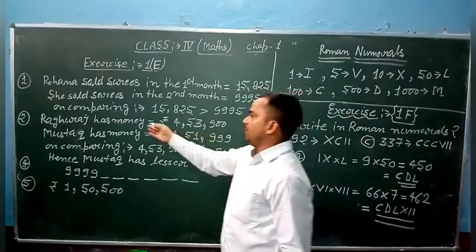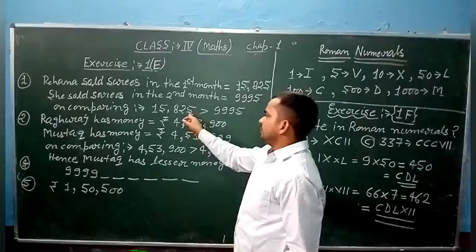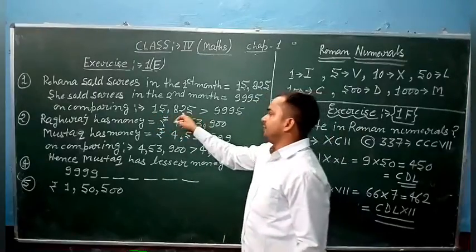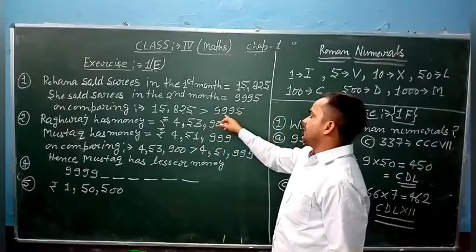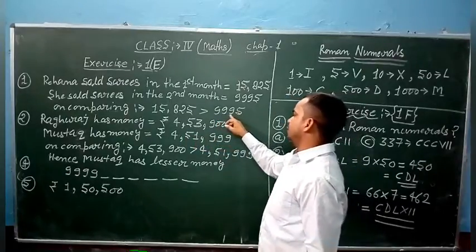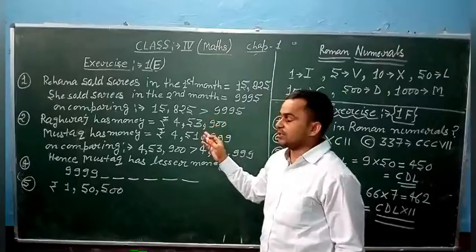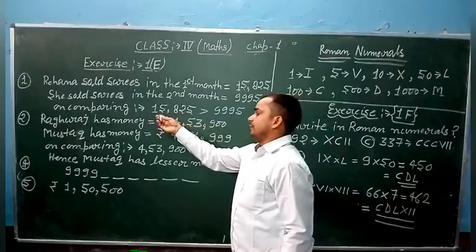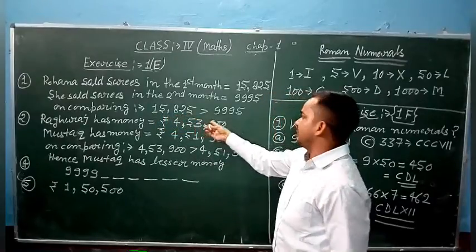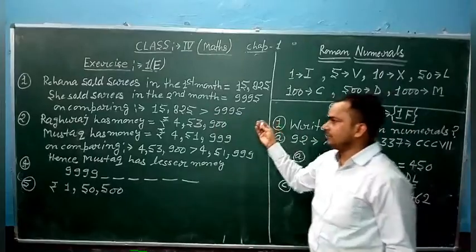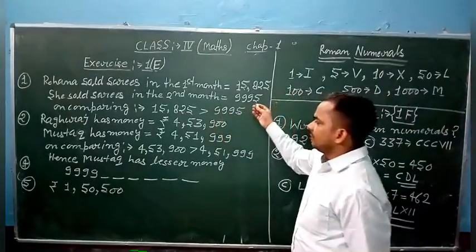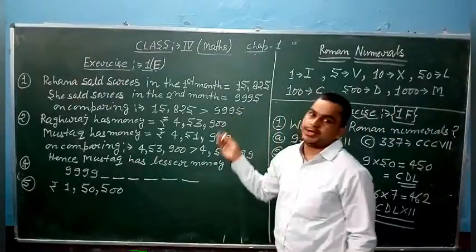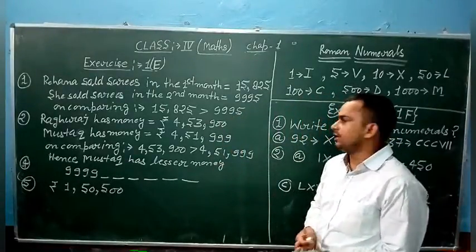Now comparing: 1, 2, 3, 4, 5. This number has 5 digits. And 9,995 has 1, 2, 3, 4 digits. That means the number which has 5 digits is greater. 15,325 is greater than 9,995. That means in the first month she sold more.